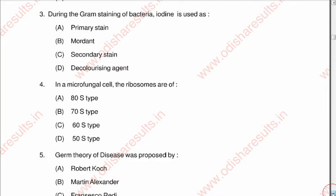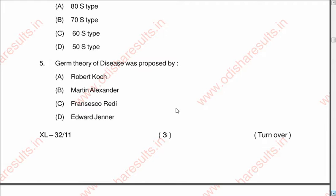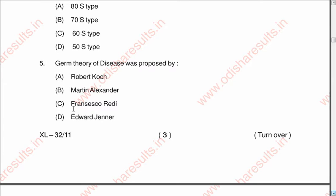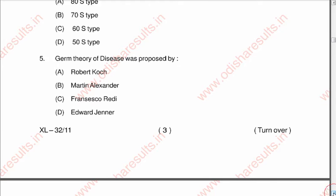Question number five: Germ theory of disease was proposed by A: Robert Koch, B: Martin Alexander, C: Francisco Redi, D: Edward Jenner. The correct option is C: Francisco Redi. He was the one who gave the concept of the germ theory of disease, which was further carried forward by Louis Pasteur.